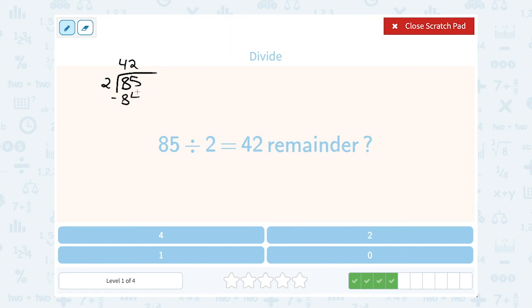So if I subtract that from my 85, I'm left with 1. So that 1 would be the remainder. So I would say 42 remainder 1.